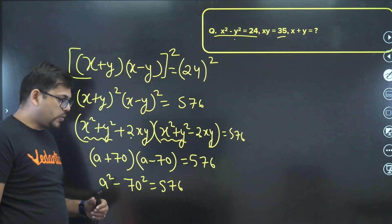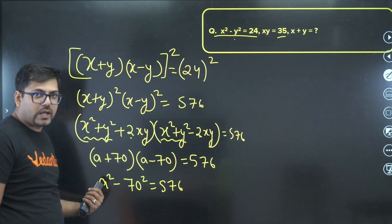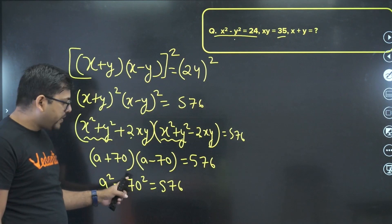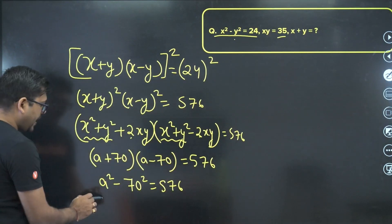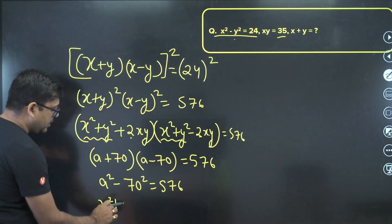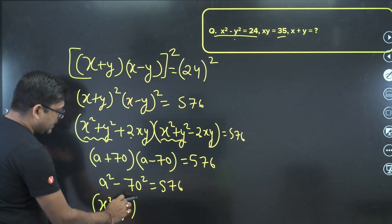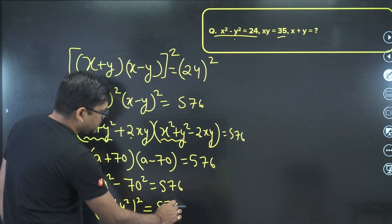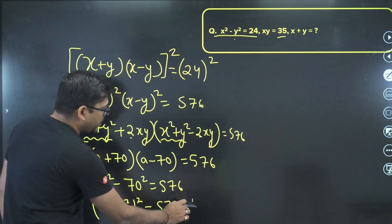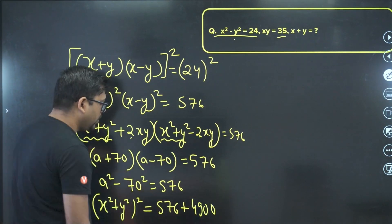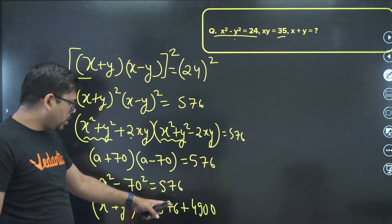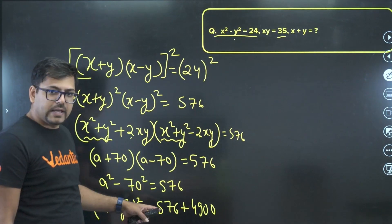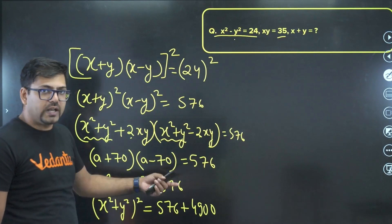Now this a² is nothing but (x²+y²)², so we have (x²+y²)² equals 576 plus 4900. Moving 4900 to the other side: 576 plus 4900 gives us 5476. So (x²+y²)² equals 5476.